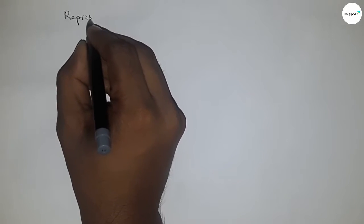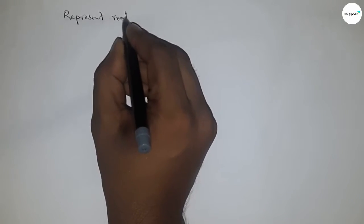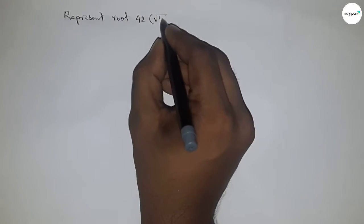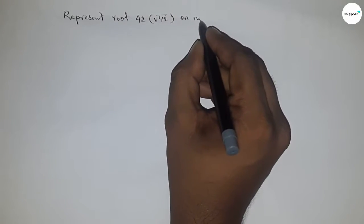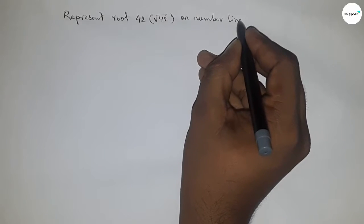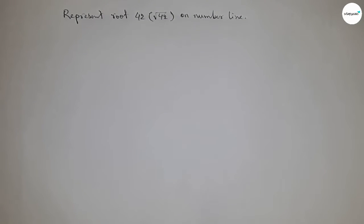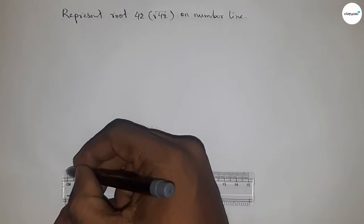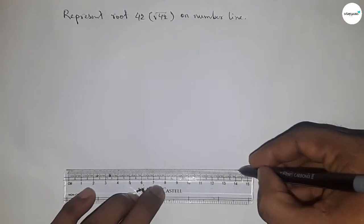Hi everyone, welcome to SSR classes. Today we'll learn how to represent root 42 on a number line. In this video, representing root 42 on number line. So first of all, drawing the number line. First, drawing a line of any length and mark the ends with arrows.